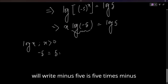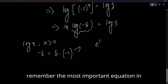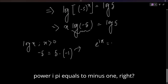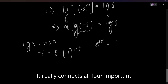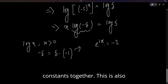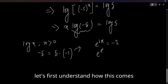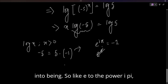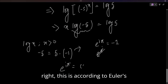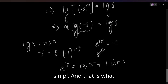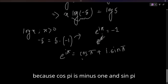We write -5 = 5 × (-1). Now recall Euler's famous identity: e^(iπ) = -1, which connects all four important mathematical constants together. According to Euler's formula, e^(iπ) = cos(π) + i·sin(π), which equals -1 because cos(π) = -1 and sin(π) = 0.